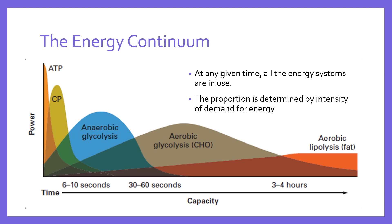As time goes on and therefore the intensity is forced to drop, the energy being produced for that exercise comes increasingly from the aerobic systems. You can see on the graph that aerobic glycolysis — the breakdown of glucose, the carbohydrate — steadily ramps up in terms of its total contribution to the energy supply. And as time passes along the bottom axis of the graph, getting upwards of 60 seconds and further out towards hours of exercise, we move towards the oxidisation of fat — aerobic lipolysis.